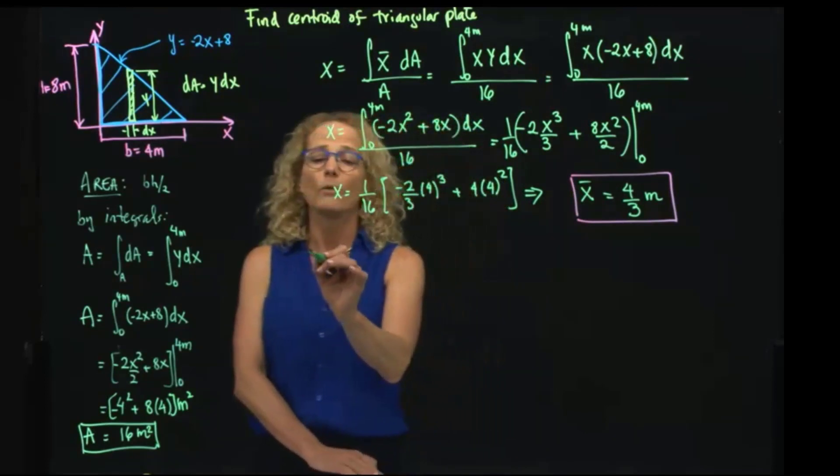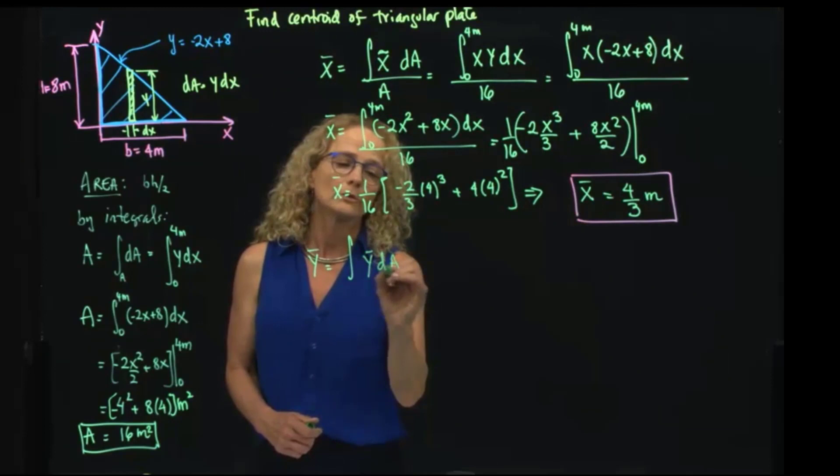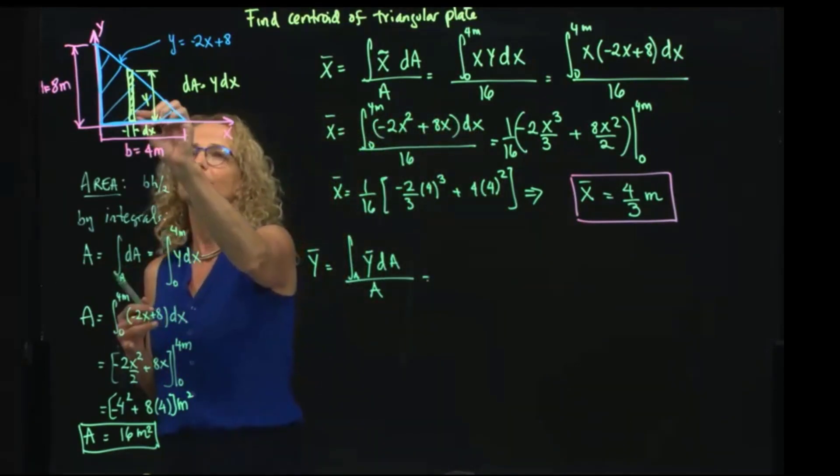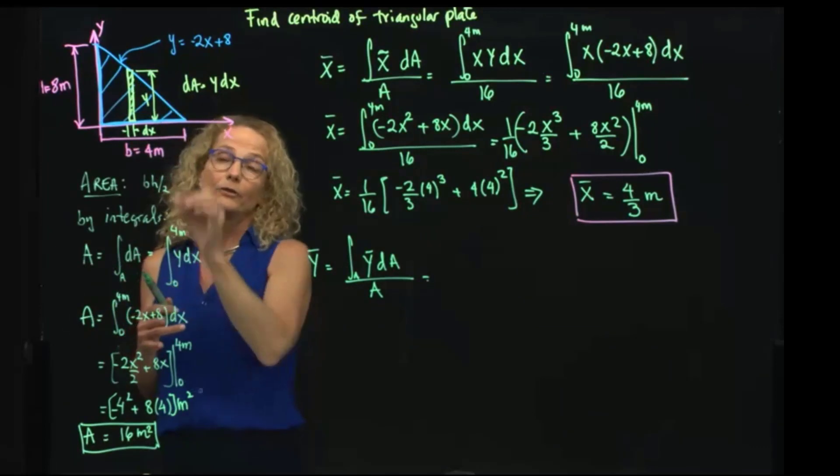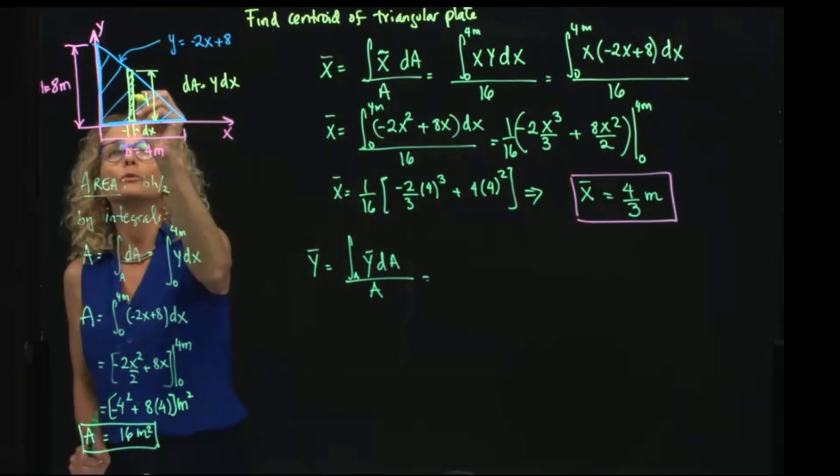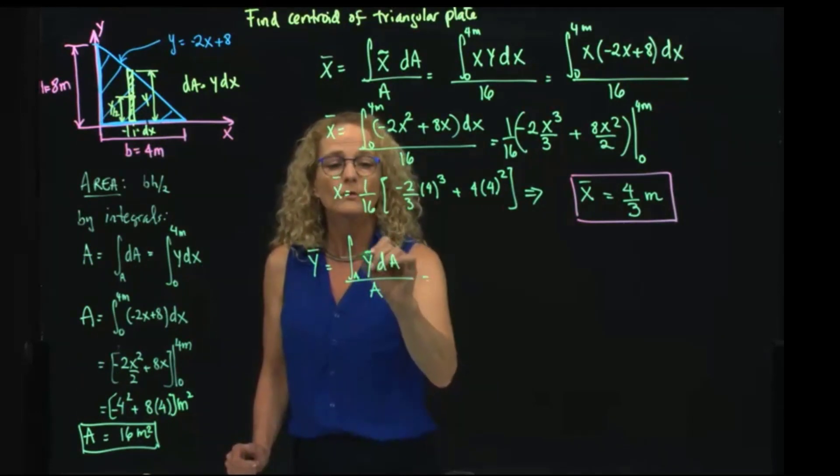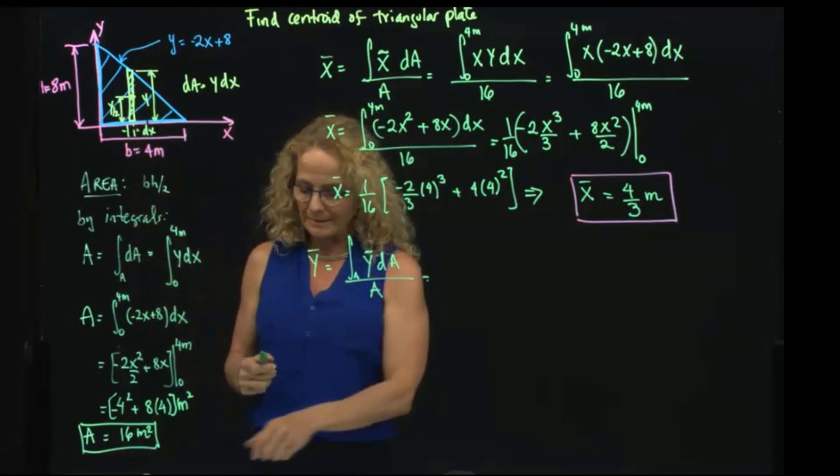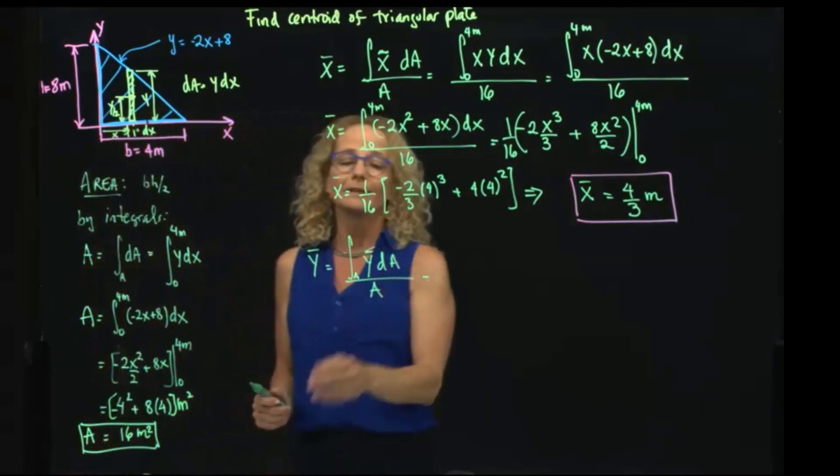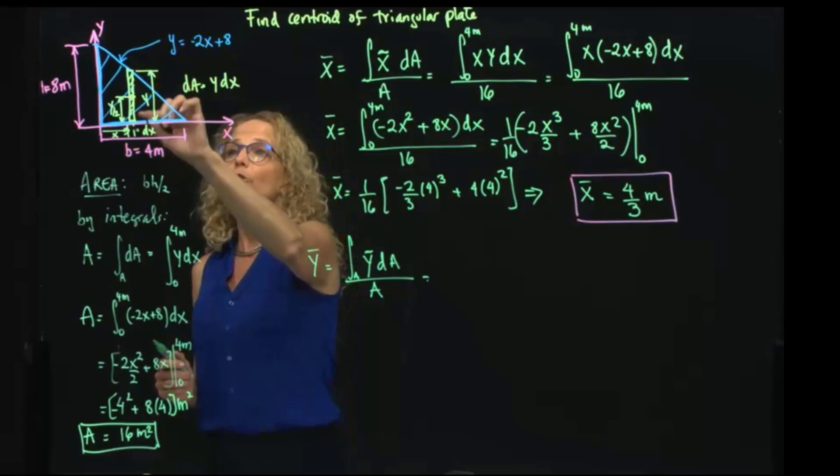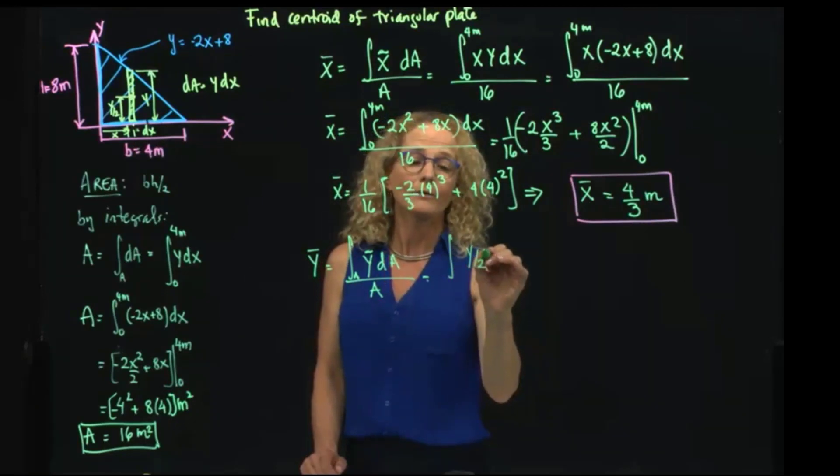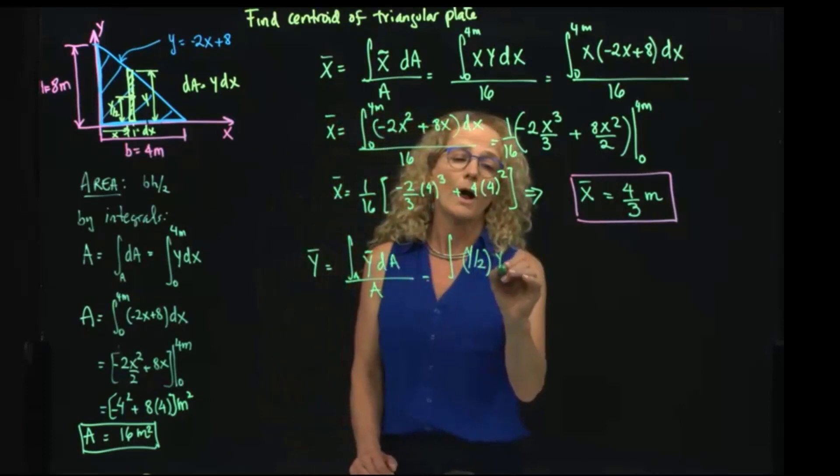In the case of Y, the centroid for the Y direction will be, by definition, this one. It's very important to understand that I have to use the centroid of the strip, which is Y over 2. Because this is the centroid of the strip. In the case of X, since all the area is at the same distance X, I didn't have to divide it by 2. But in this case, the centroid of this vertical strip is Y over 2. Therefore, I have to write Y over 2, and my differential of area is the same, which is Y dX.